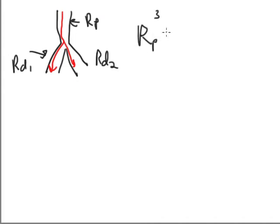And this we will say has a radius RP, it's going to be the parent, and this will be a radius of RD1, so it's daughter 1, and this is RD2. What Murray's law says is that the cube of the parent radius is going to be equal to the sum of all the daughter radii cubed.